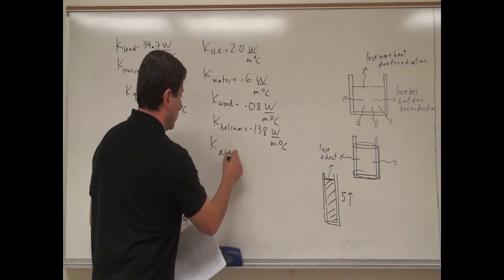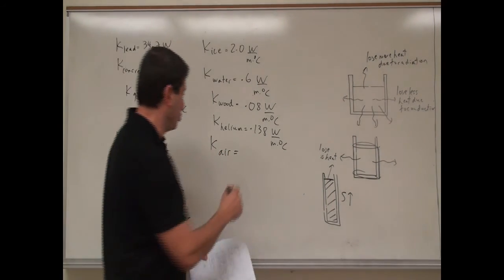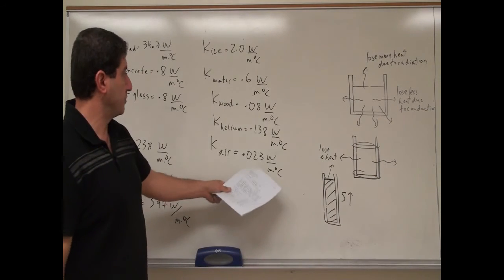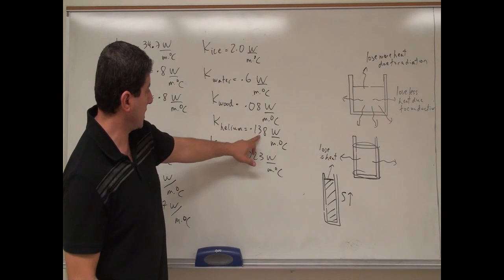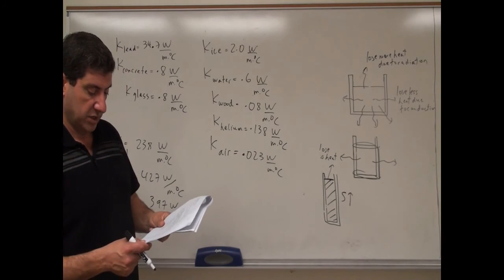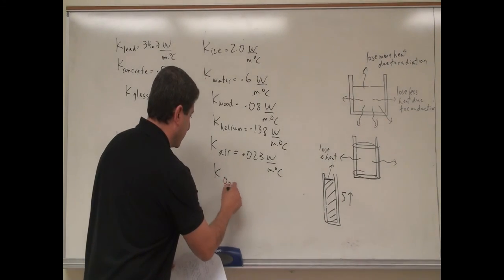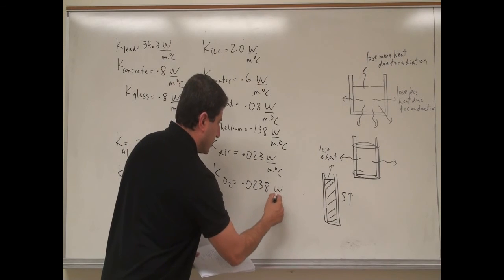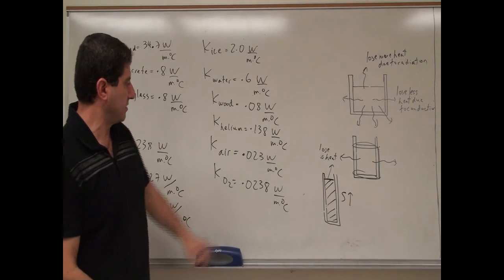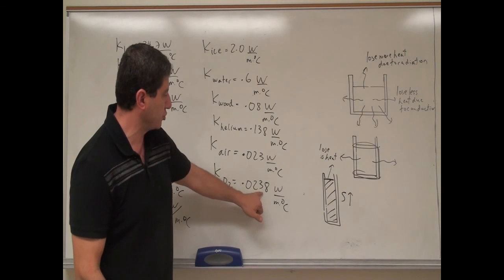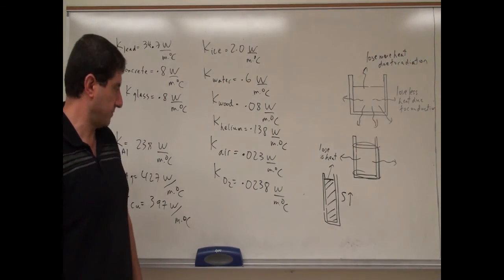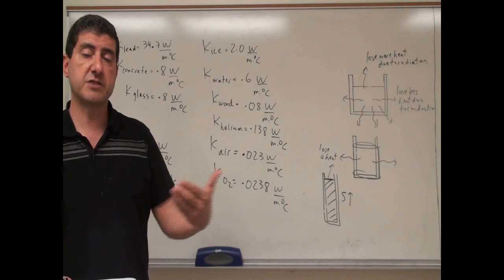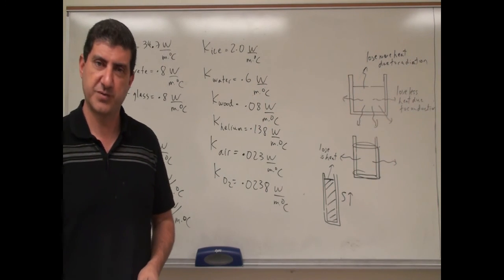Air is 0.023 W/m·°C — less than wood and much less than helium. Oxygen is 0.0238 W/m·°C, essentially the same as air but slightly larger. These examples give a sense of the range of conductivities across different materials. In the next video we will talk about how conductors add up in series and parallel. Thank you very much.